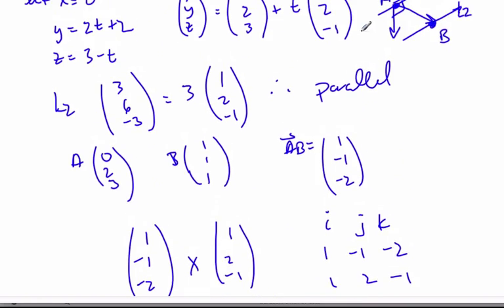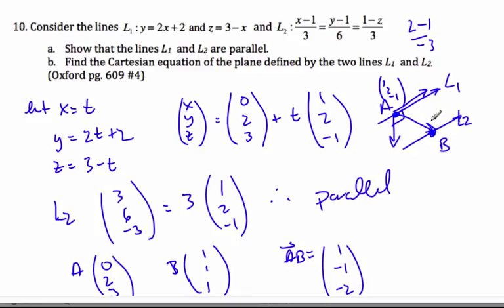So to summarize, when I have two parallel lines, I need to create a third vector that connects these two lines together, a point from each line. So then I can cross product the direction vector of the line with this new vector to get the normal.